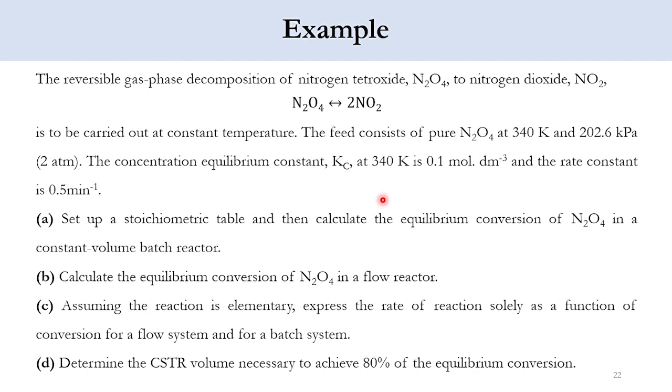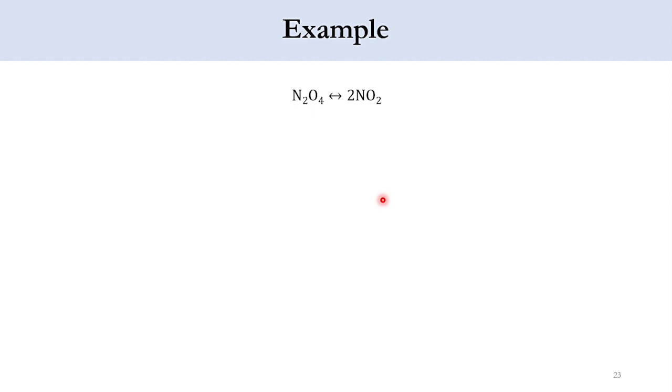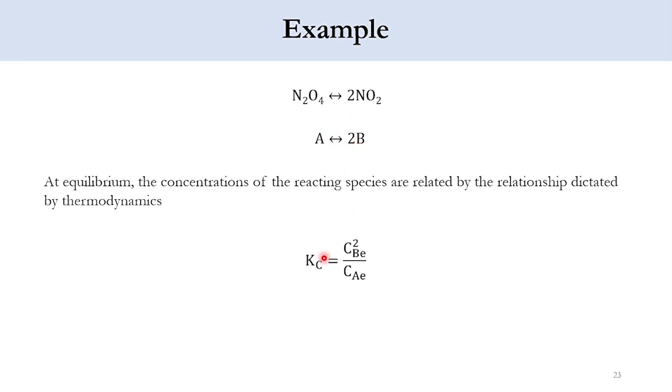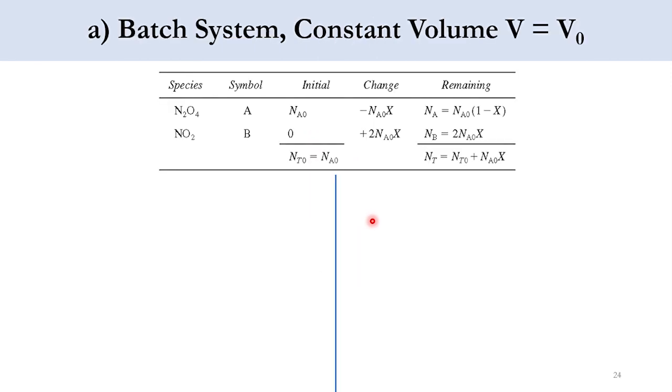Before going to the steps, we have to first develop the relation for K_C. N2O4 in a reversible manner goes to 2NO2. We can write it as A to 2 moles of B. Accordingly, we will write K_C as concentration of B at equilibrium squared, because it is the stoichiometric coefficient, divided by C_A at equilibrium. After doing that, we will go to our first part, which is first we need to develop the stoichiometric table.